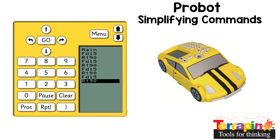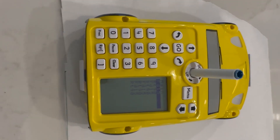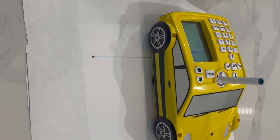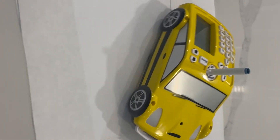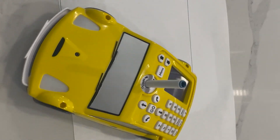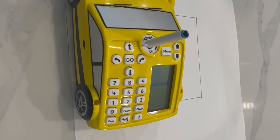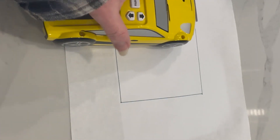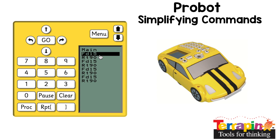Let's see what I make with these commands. What did you think those commands were going to make? Did you guess a shape? What shape did you guess? Did you guess a square? If you did, you're correct. If you look, I have 15, 90, 15, 90, 15, 90, 15, 90. I repeat that four times.